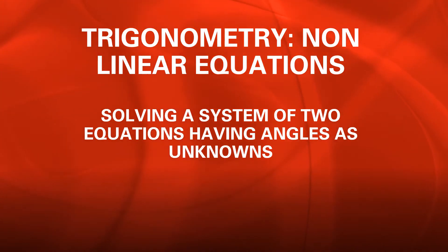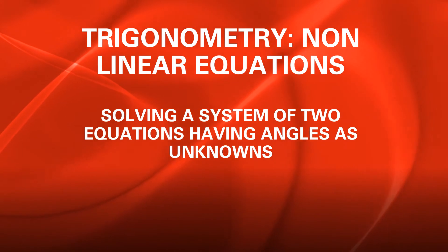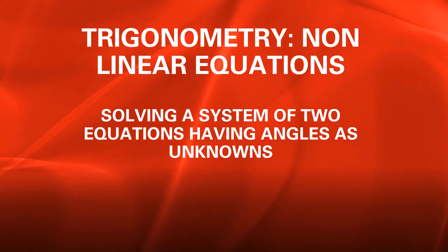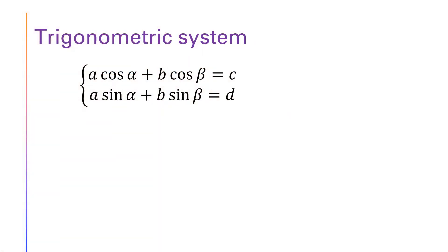In this video we are going to show how to solve a system of two non-linear trigonometric equations having two angles as unknowns. The trigonometric system to be solved writes as follows. The first equation writes: a times cosine alpha plus b cosine beta equals c. The second equation writes: a times sine alpha plus b sine beta equals d. In this system, a, b, c, and d are parameters. The unknowns here are the angles alpha and beta.